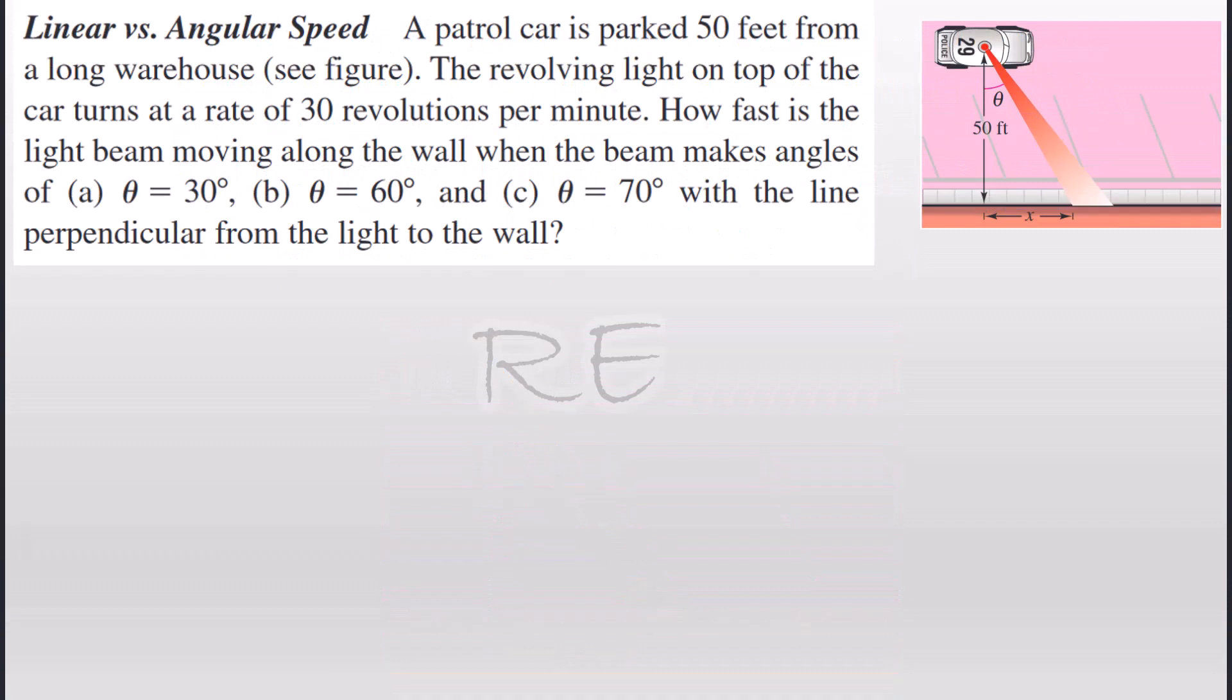We're going to model this problem with a right triangle in which one leg will be the distance from the revolving light to the wall of the warehouse, 50 feet, and the distance covered by the revolving light being up on the wall of the warehouse will be x. The angle formed by the revolving light will be theta.